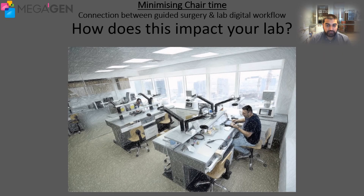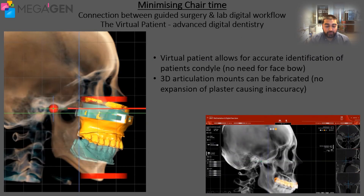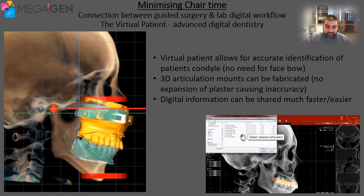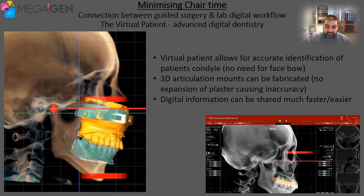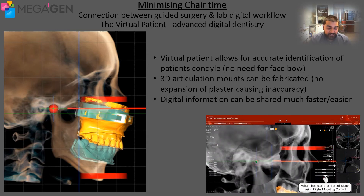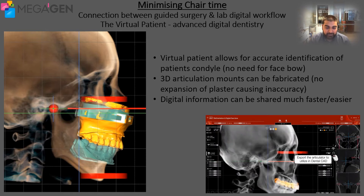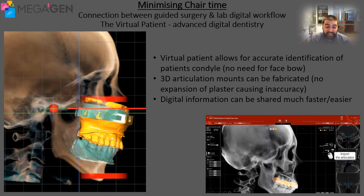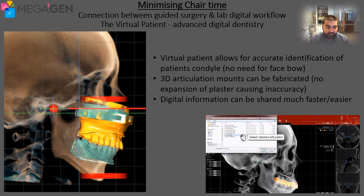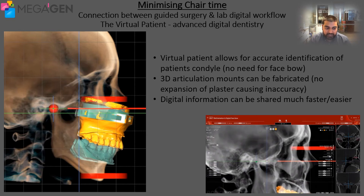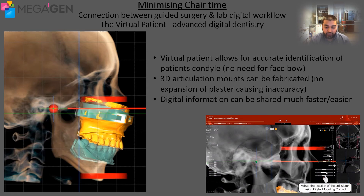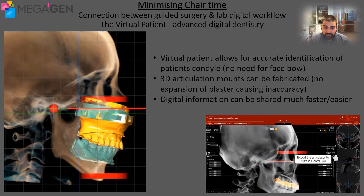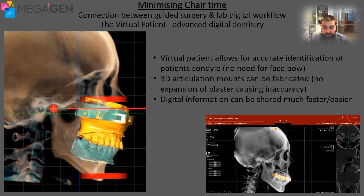Everything that we've been talking about so far has been from a clinical and planning point of view, but how does this actually impact your lab? One of the ways in which the lab can benefit from a digital workflow is articulation and the use of articulators. Articulation in a lab is not always as accurate as we would like, and this can be from a number of things — it could be from the accuracy of the bite not being quite right, or it could be that the impressions were a bit distorted.